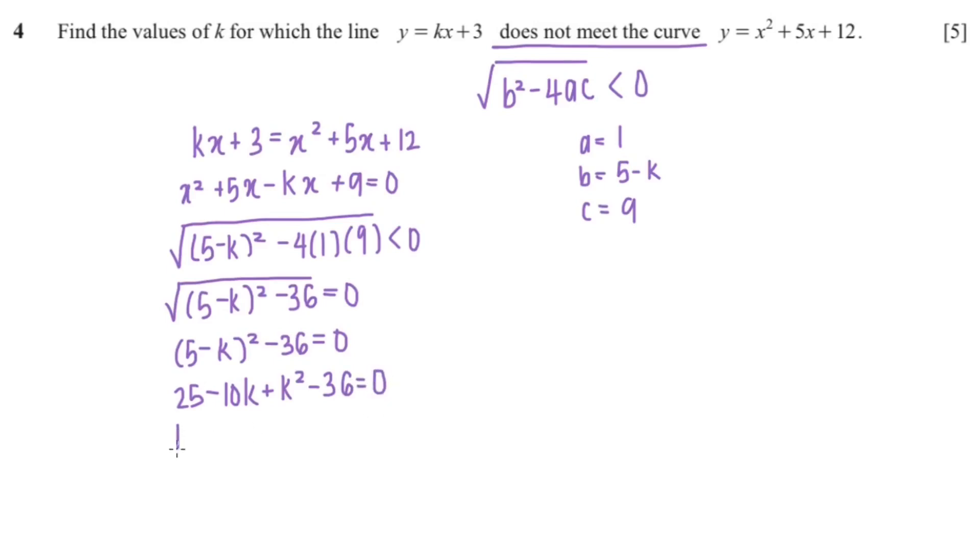So k squared minus 10k minus 11 equals 0.